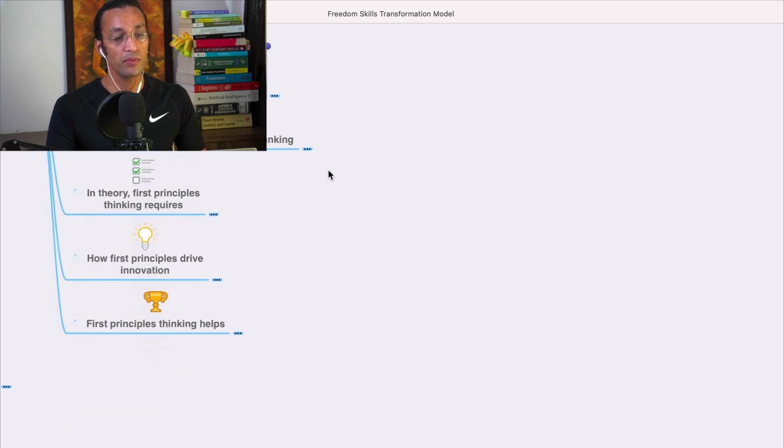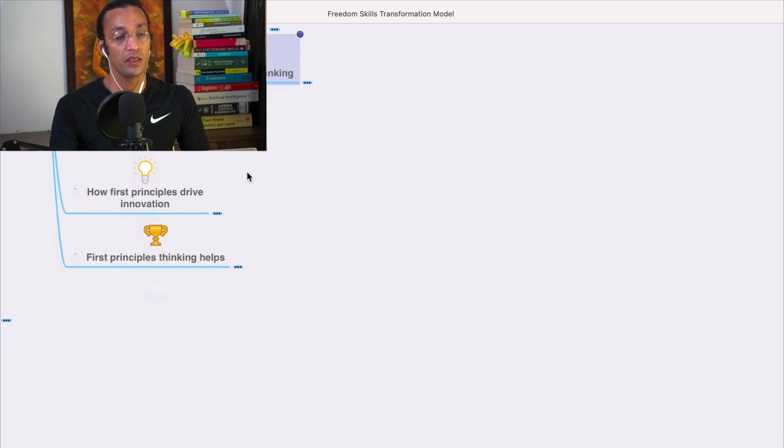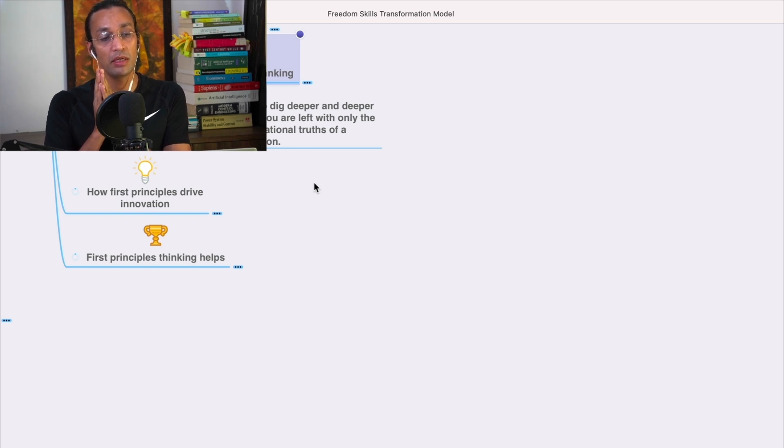First principles thinking is scientific or scientist-like thinking. In theory, first principles thinking requires you to dig deeper and deeper unless you find the truth.